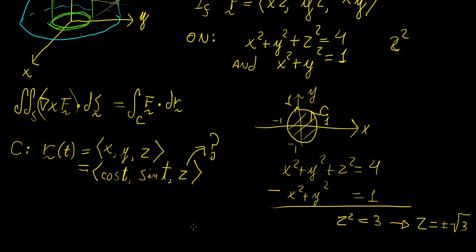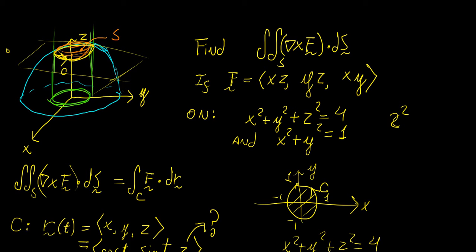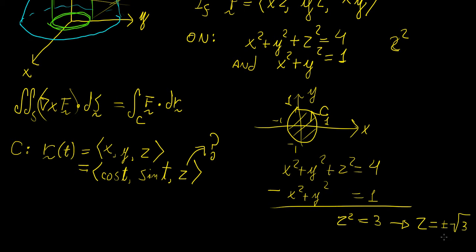Now, we know that this intersection happens along the positive Z axis, so obviously the term, the numerical value that we're going to choose is just the positive square root 3.